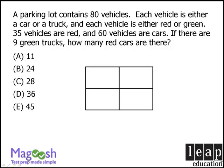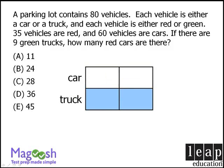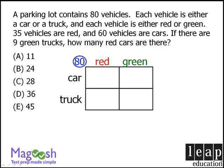So let's begin. One feature is vehicle type, so we'll reserve the two boxes in the top row for cars, and the two boxes in the bottom row for trucks. The other feature is color, so we'll reserve the two boxes in the left-hand column for red vehicles, and the two boxes in the right-hand column for green vehicles. The question tells us that we have 80 vehicles in total, so we'll place that information here. Our ultimate goal will be to place each of our 80 vehicles in one of the four boxes, depending on each vehicle's characteristics.